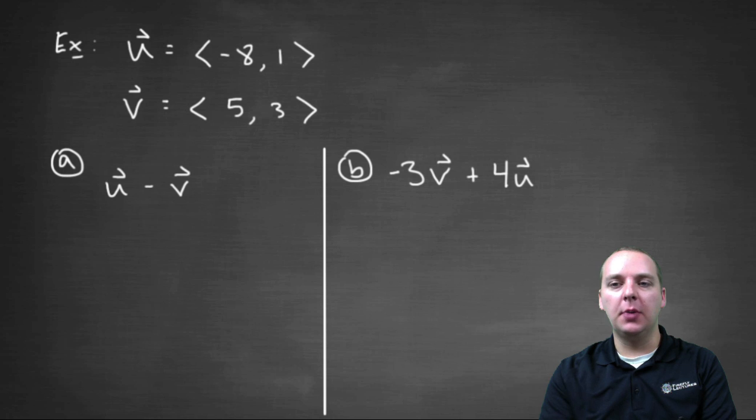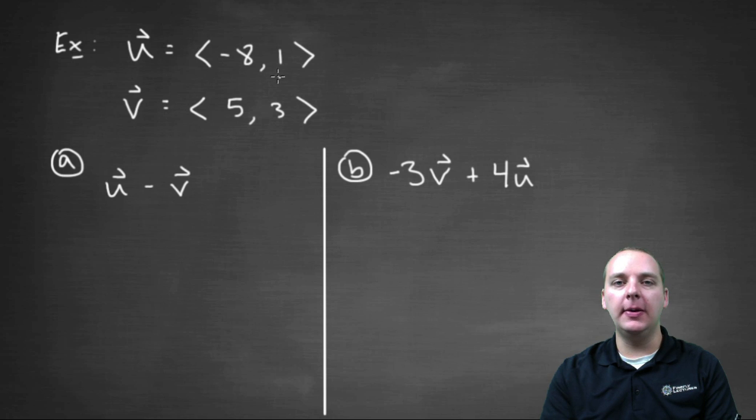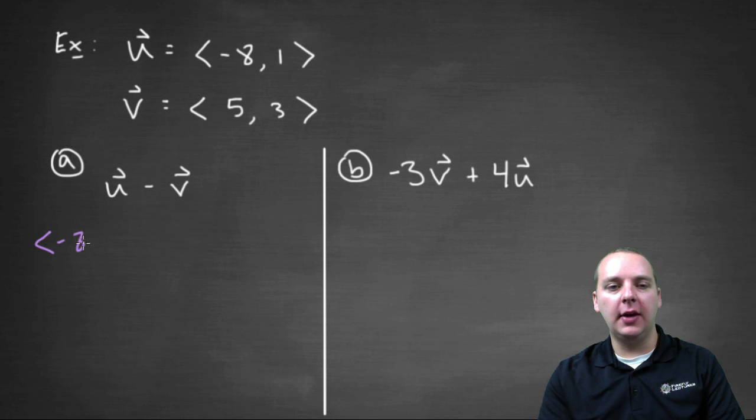Alright, let's do a couple more. Here we're going to take two vectors. We have vector u which is negative eight comma one and vector v which is five comma three. So let's see if we can do u minus v.